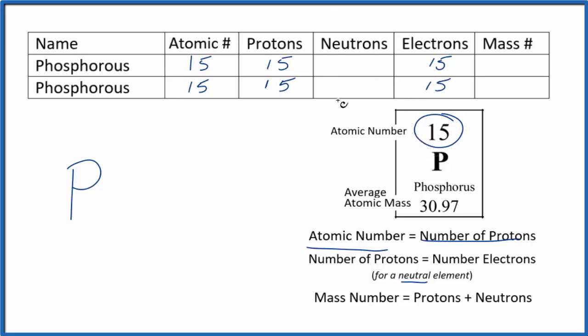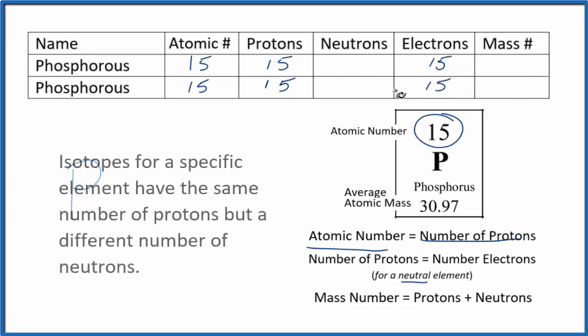That leaves us with neutrons and the mass number. For isotopes, the only thing that's different is the neutrons. And since protons plus neutrons equal mass number, the mass number will be different too.